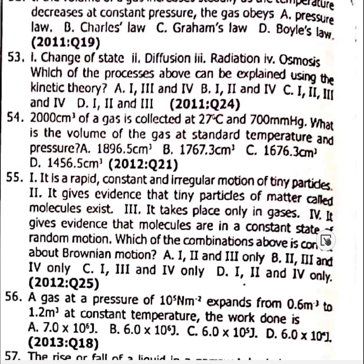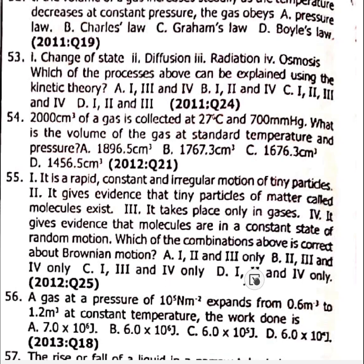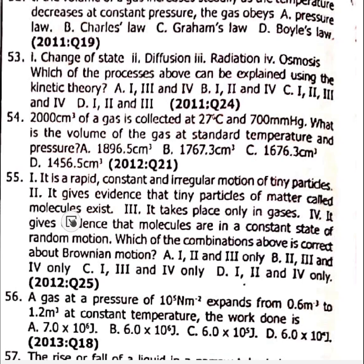Question 55: Brownian motion gives evidence that molecules are in a constant state of random motion. Brownian motion is a rapid, constant, and irregular motion of tiny particles. It gives evidence that tiny particles of matter called molecules exist, and that molecules are in a constant state of random motion — option D.